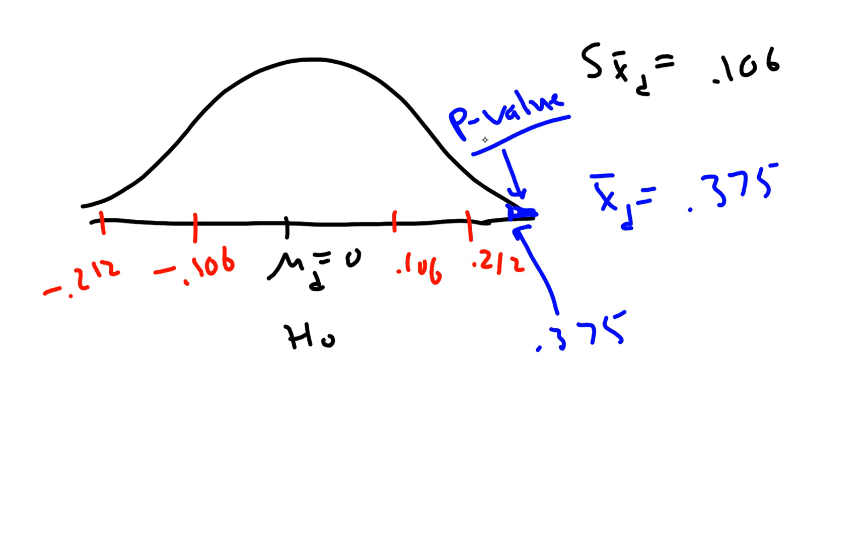Let's get to work on calculating that. You want to calculate a t-score. This t-score measures the number of standard deviations you are away from the mean. It's always going to be your average difference minus H₀ over S of X̄_d. So in this case it would be 0.375 minus 0 over 0.106.